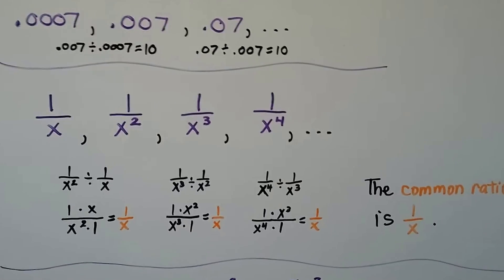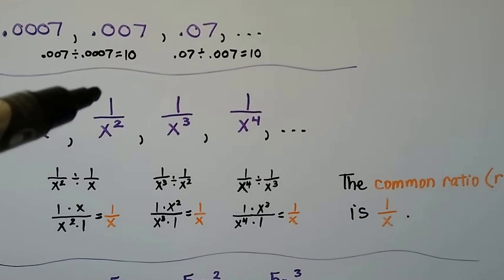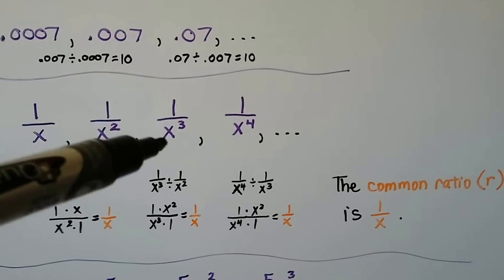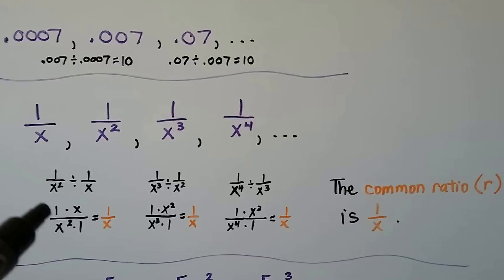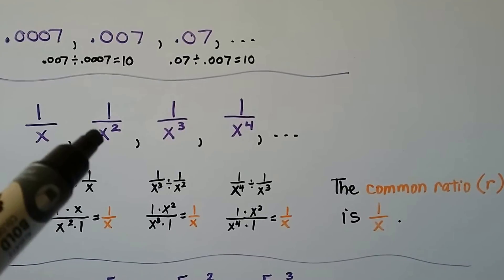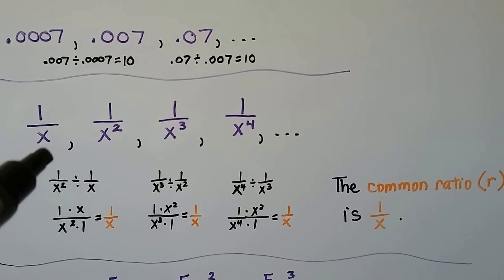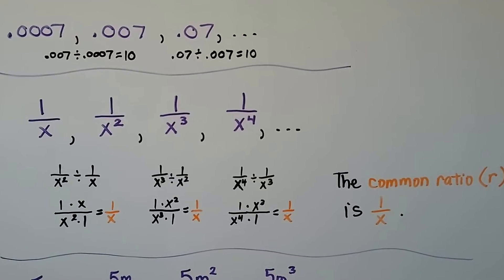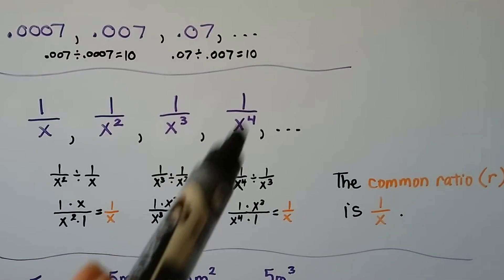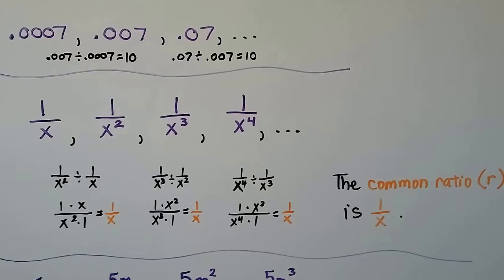Take a look at this one. Here we've got the quotient of 1 and x, the quotient of 1 and x squared, 1 and x to the third, 1 and x to the fourth. We divide 1 over x squared by 1 over x, and we get 1 over x. We do it again for this one, we do it again for this one. Our common ratio, r, is the quotient of 1 and x.